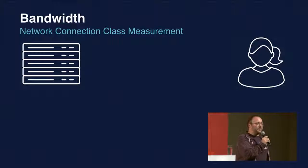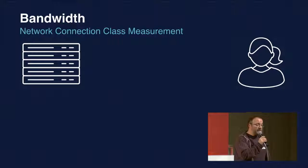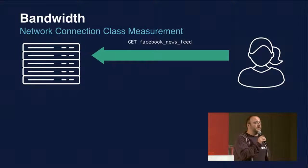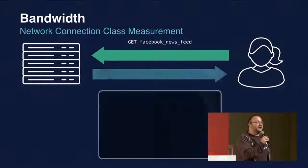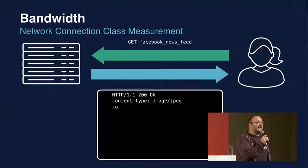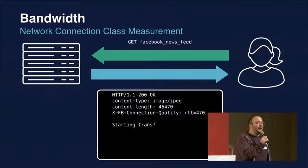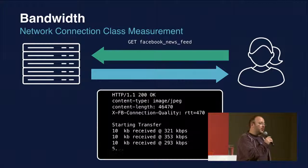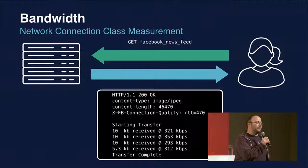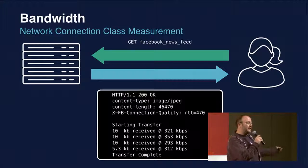The idea we came up with is Network Connection Class — something we also open sourced. We do a passive measurement of bandwidth: as the app sends and receives packets, we keep track of how long it takes and measure bandwidth. We throw out small packets because overhead starts dominating, and we only look at packets above a certain size.